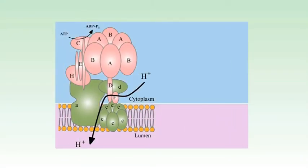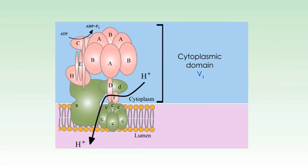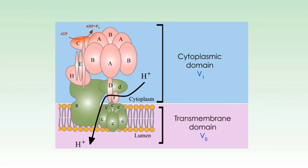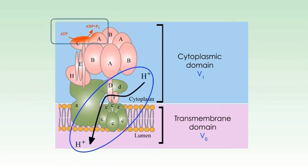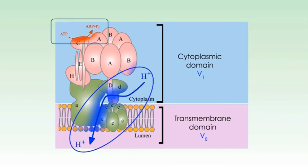The structure of V-class pumps is more complicated than P-class pumps. They have two discrete domains: a cytoplasmic domain V1 and a transmembrane domain V0, with multiple subunits forming each domain. Binding and hydrolysis of ATP by subunits in V1 provide the energy for pumping hydrogen ions through the proton-conducting channel in V0. Unlike P-class ion pumps, V-class proton pumps are not phosphorylated and dephosphorylated during proton transport.